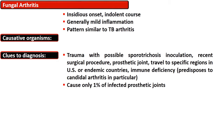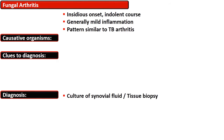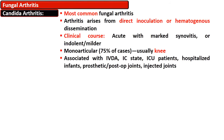Clues to diagnosis include trauma with possible sporotrichosis, recent surgical procedure, presence of a prosthesis, travel to specific regions in the US or endemic countries, and immune deficiency. Fungal arthritis accounts for less than 1% of arthritis cases in patients with prostheses. Candida is the most common fungal cause of arthritis, arising from direct inoculation or hematogenous dissemination.